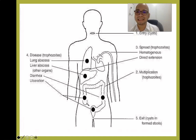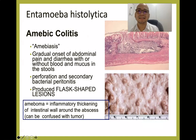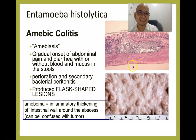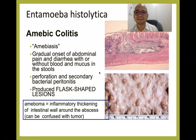Amoebic colitis is one manifestation of E. histolytica, characterized by ulceration due to heavy infection. We call it amoeboma — an inflammatory thickening of the intestinal wall around the abscess. It is characterized by flask-shaped lesions as a result of perforation and secondary bacterial peritonitis. Amoebic colitis has a gradual onset of abdominal pain and diarrhea, with or without blood and mucus in the stool.